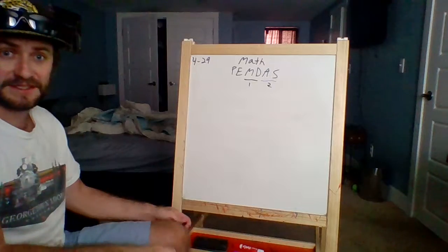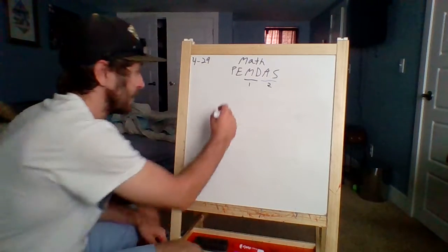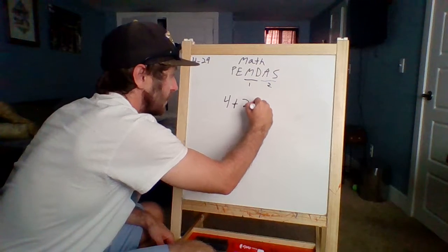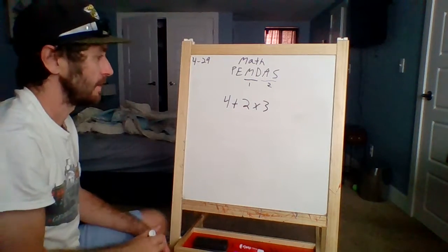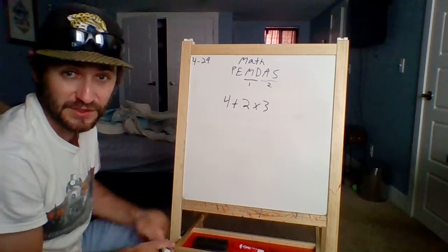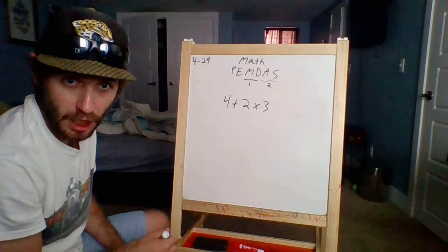So for instance, let's look at this problem right here. Four plus two times three. Well, okay, four plus two is six. Six times three is 18, right? Wrong.